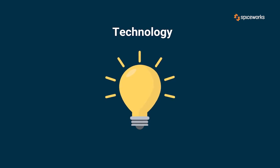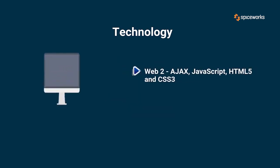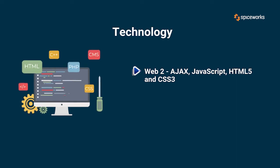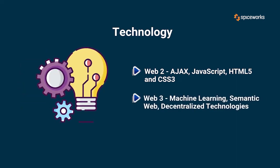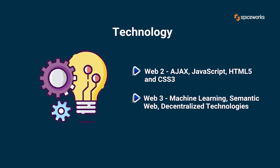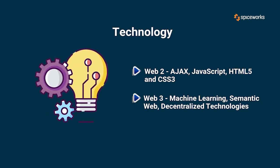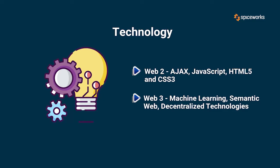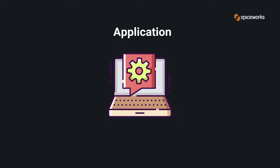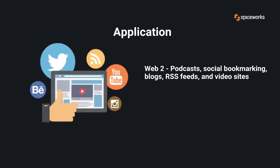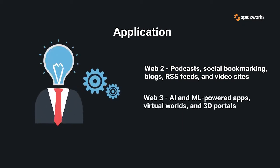Technology: the most common Web 2 technologies include AJAX, JavaScript, HTML5, and CSS3. Machine learning, deep learning, semantic web, and decentralized technologies power Web 3 applications. Web 2 includes podcasts, social bookmarking, blogs, RSS feeds, and video sites, while Web 3 incorporates AI and machine learning-powered apps.